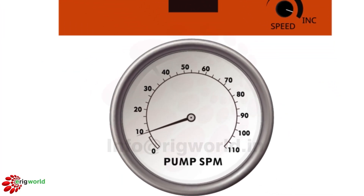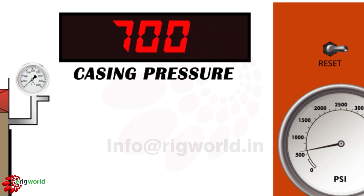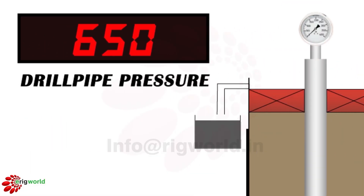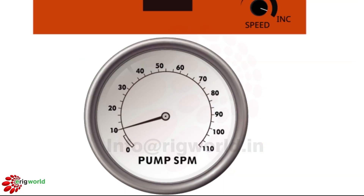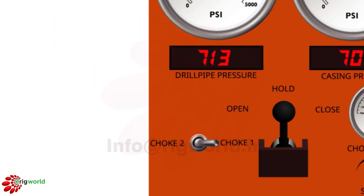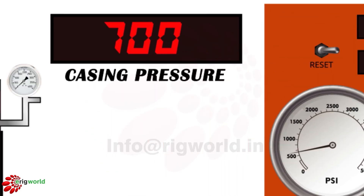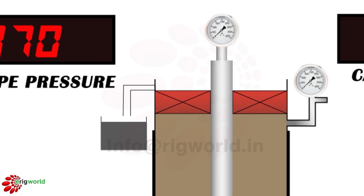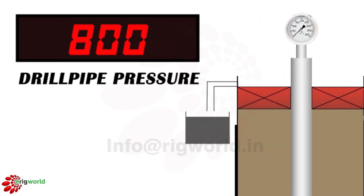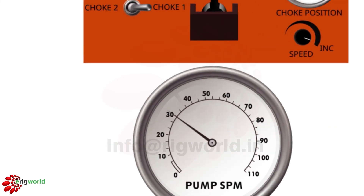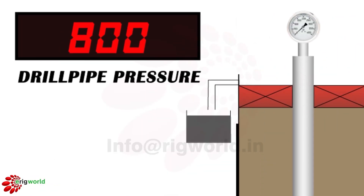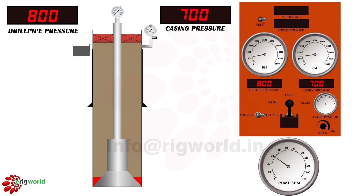Once the pressure is stabilized, increase pump speed to 10 SPM keeping casing pressure constant at 700 psi — drill pipe pressure increases to 650 psi. Repeat the steps by increasing pump speed in steps of 5 SPM, keeping casing pressure constant at 700 psi, and drill pipe pressure will increase. When the pump is at kill speed of 30 SPM, drill pipe reads 800 psi — this is the initial circulating pressure, ICP.